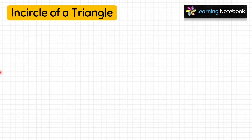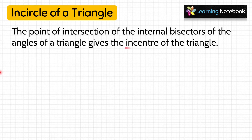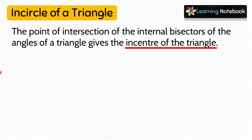Let's first understand what is the incircle of a triangle. To draw the incircle of a triangle, we first need to find the incenter of a triangle. The point of intersection of the internal bisectors of the angles of a triangle gives the incenter of the triangle.